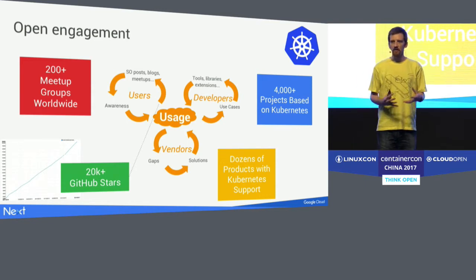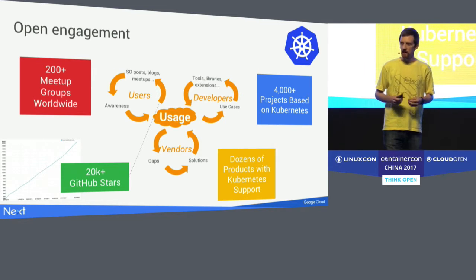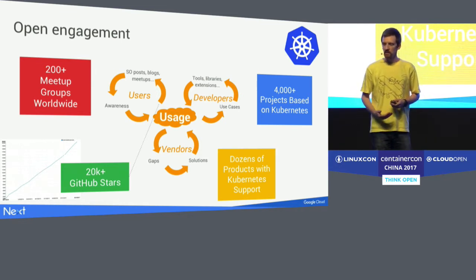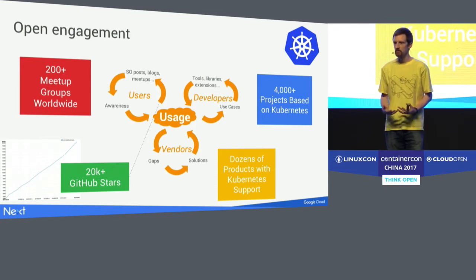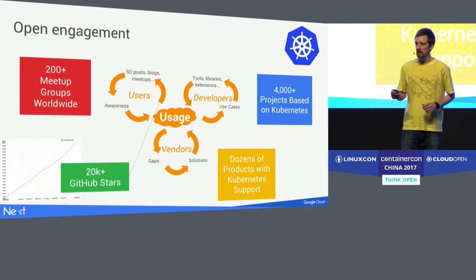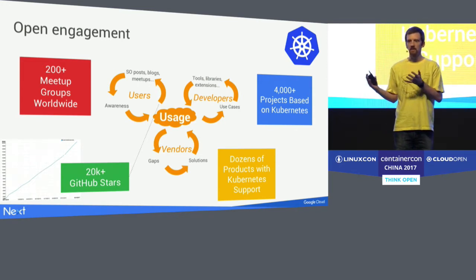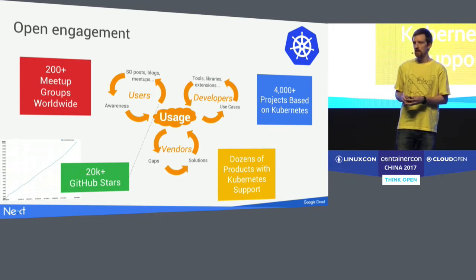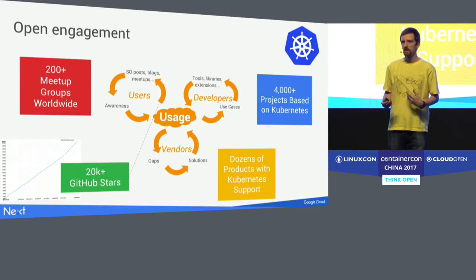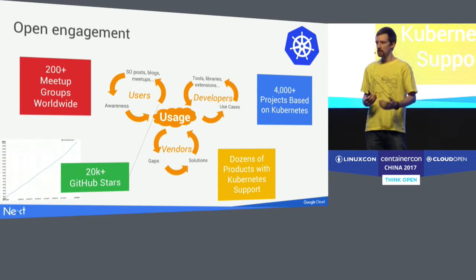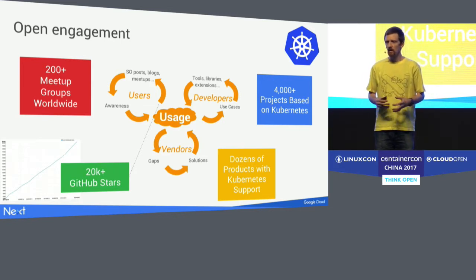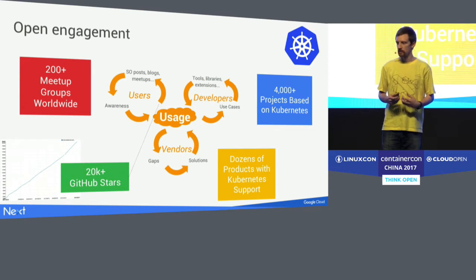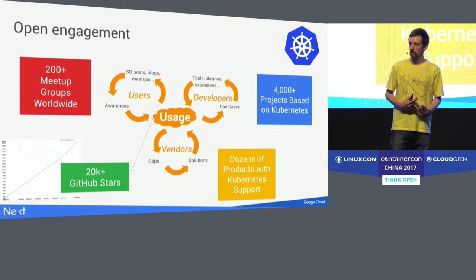We see this as a very large community that we need to grow. We encourage users to develop communities of their own in local areas by creating meetup groups and sharing information with local developers. There are now over 4,000 projects based on Kubernetes — things that use the Kubernetes API to build on top of it — including projects like OpenShift and other PaaS solutions. All pieces of Kubernetes, including the UI dashboards, are also open source.